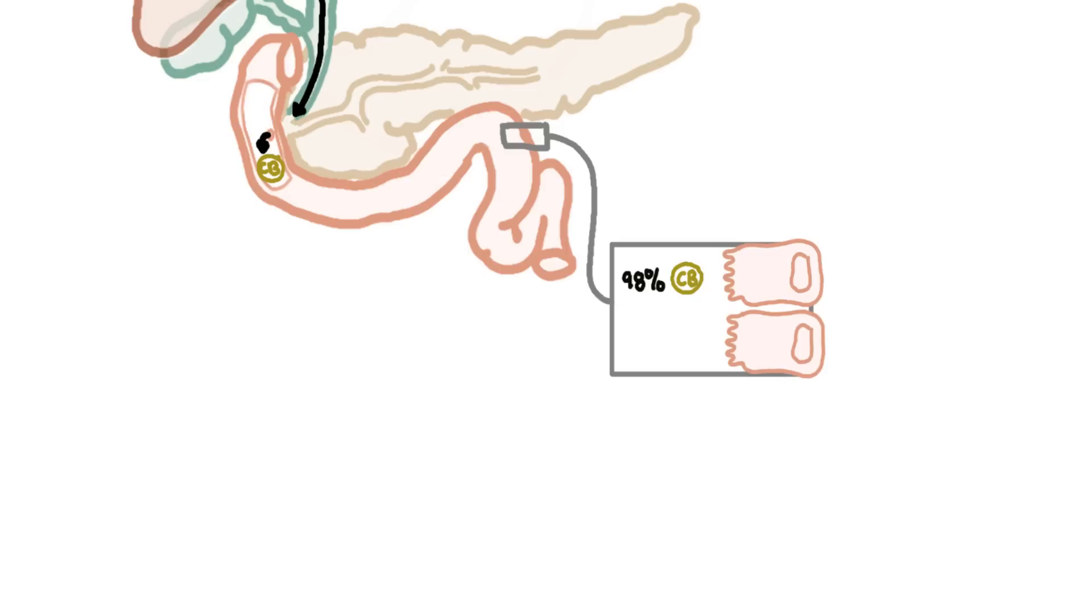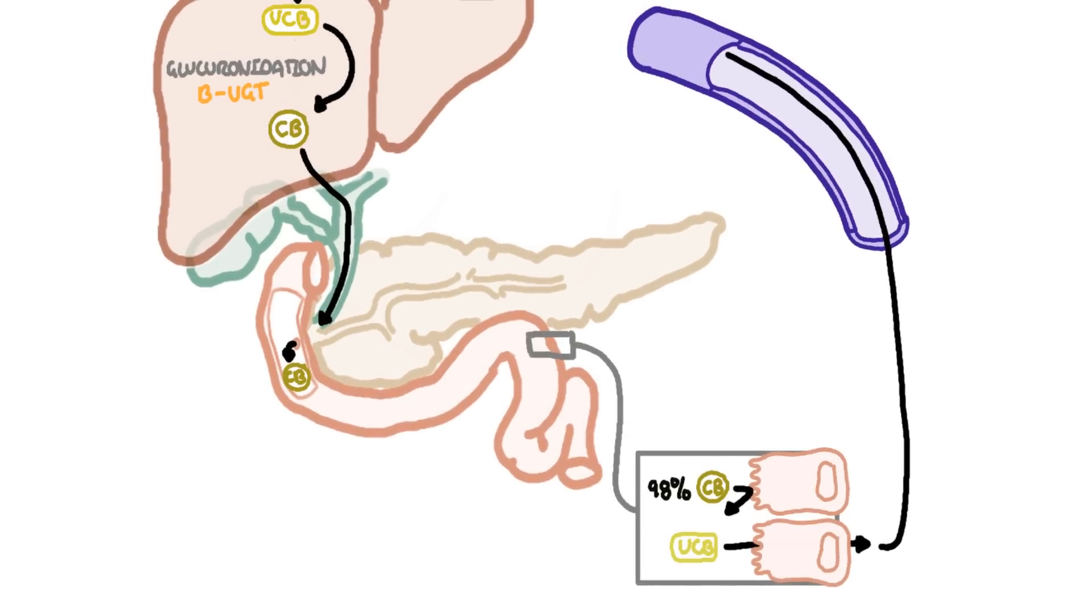Conjugated bilirubin is water soluble and so it is not absorbed across the lipid membrane of the small intestinal epithelium. In comparison, the unconjugated bilirubin fraction is partially reabsorbed and undergoes enterohepatic circulation, which is where it travels through the portal system back to the liver. This unconjugated bilirubin can then undergo glucuronidation again to become conjugated bilirubin.